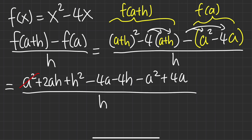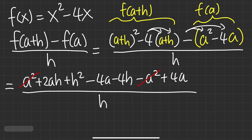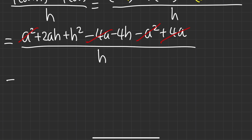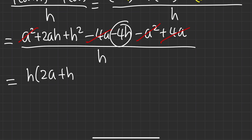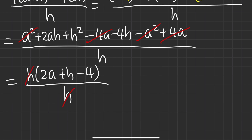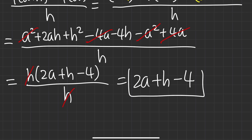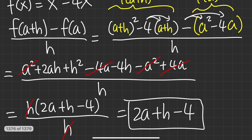After distributing the negative, we can cancel a squared with minus a squared, and minus 4a plus 4a cancel. The remaining terms all have h, so factor out h to get h times 2a plus h minus 4, all over h. Cancel the h and we get 2a plus h minus 4. Once again the original h got cancelled.